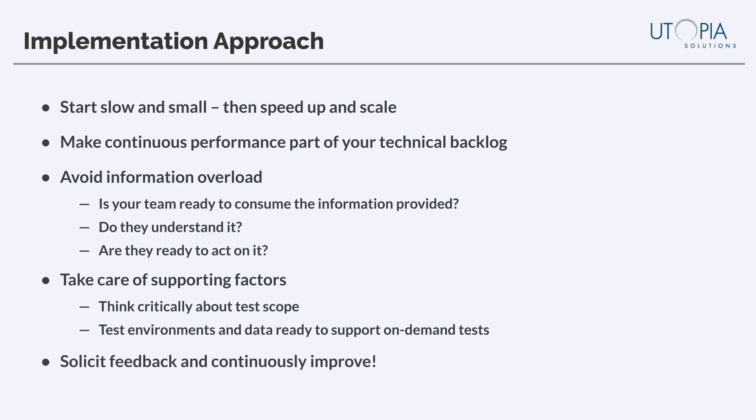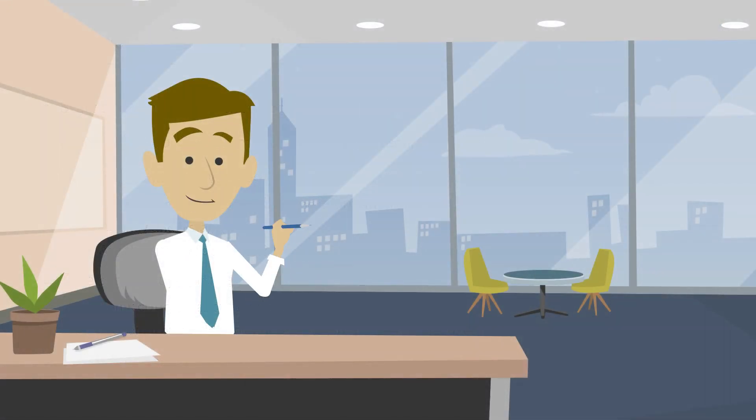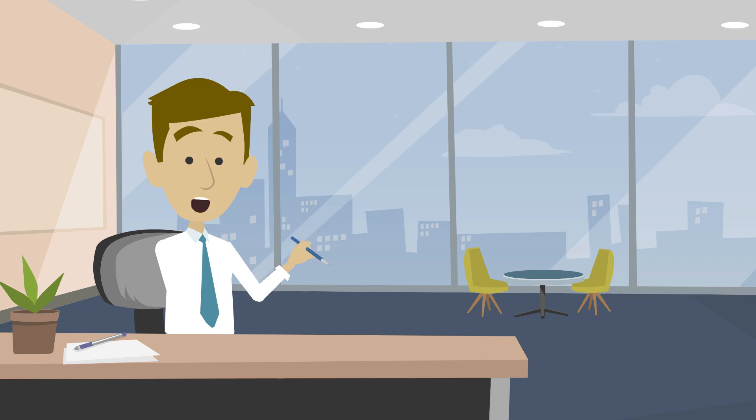Finally, this won't be a fire and forget solution. As you implement continuous performance testing, you should get feedback from the team and improve the solution so it's adding the appropriate value to your delivery cycle. As the ability to understand the performance data and take action on it evolves, the team can provide valuable feedback on what information they get and how they get it. And of course, this shouldn't be done in a vacuum — everything that you're doing should be out in plain sight, to ensure that you can make the work part of the technical backlog and continuous improvement efforts.